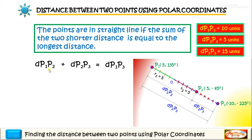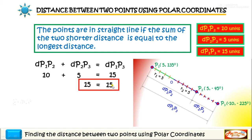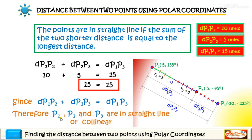So we have the value of P1 P2 which is 10 units plus the value of the distance P2 P3 which is 5 units, and the value of the distance P1 P3 is 15 units. Summing these two numbers, we have 15 equal to 15. Since distance P1 P2 plus P2 P3 equals the distance from P1 P3, therefore we can say that P1, P2 and P3 are in a straight line, or collinear.